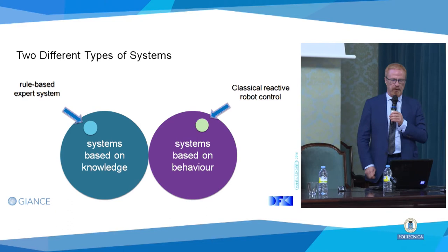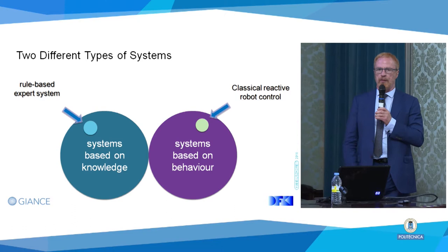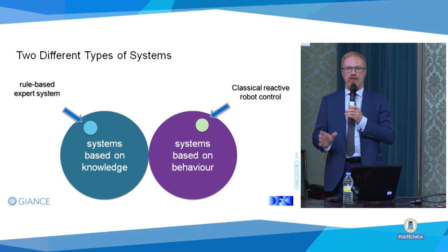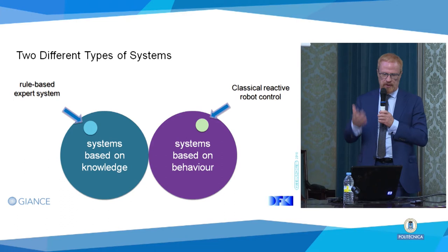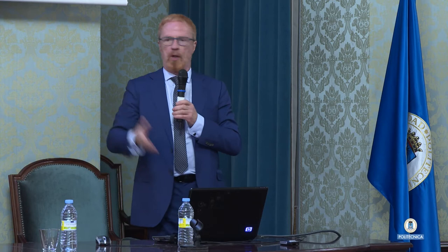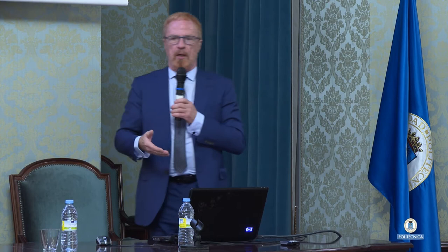Let me start with something that was mentioned with different words already. When I started, my first job after graduate school was in the Artificial Intelligence Center of Stanford Research Institute, SRI International today. I soon saw that there are two different types of systems, even back then. There are some systems that have knowledge — expert systems, as they were called — and others, the classical robot control. They made the robot go around corners and avoid walls. They had behavior but didn't know anything, while the NLP systems had knowledge but didn't know how to behave.